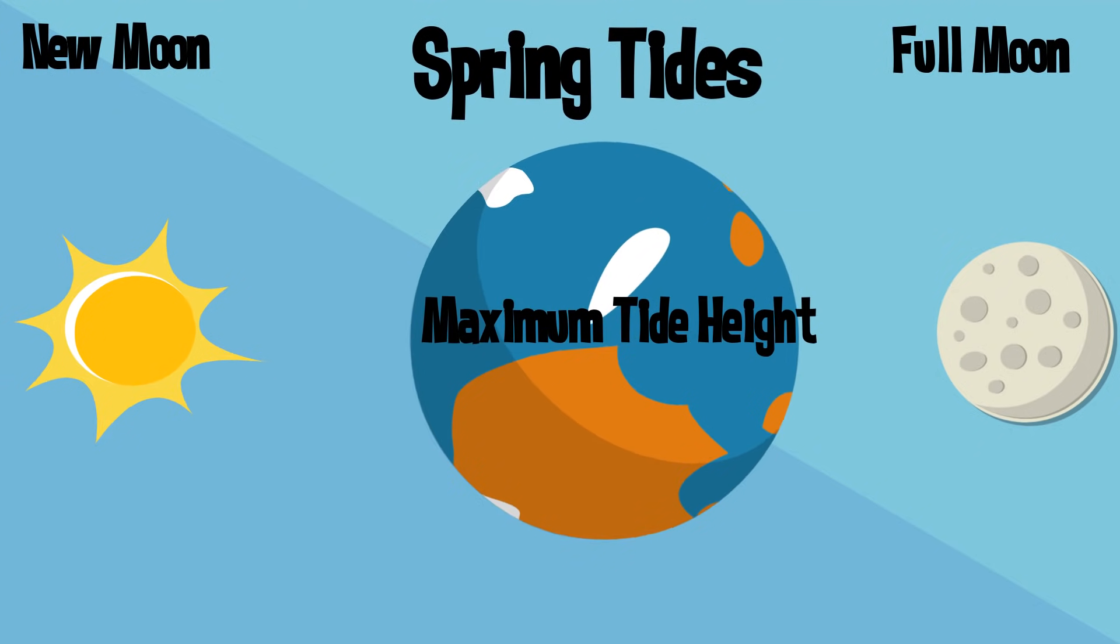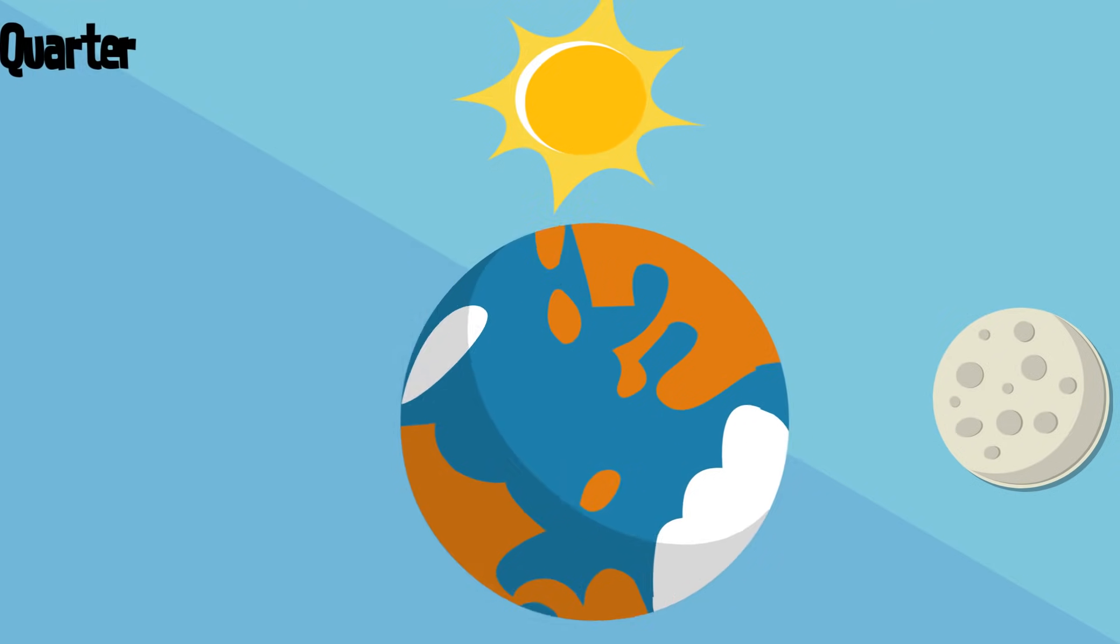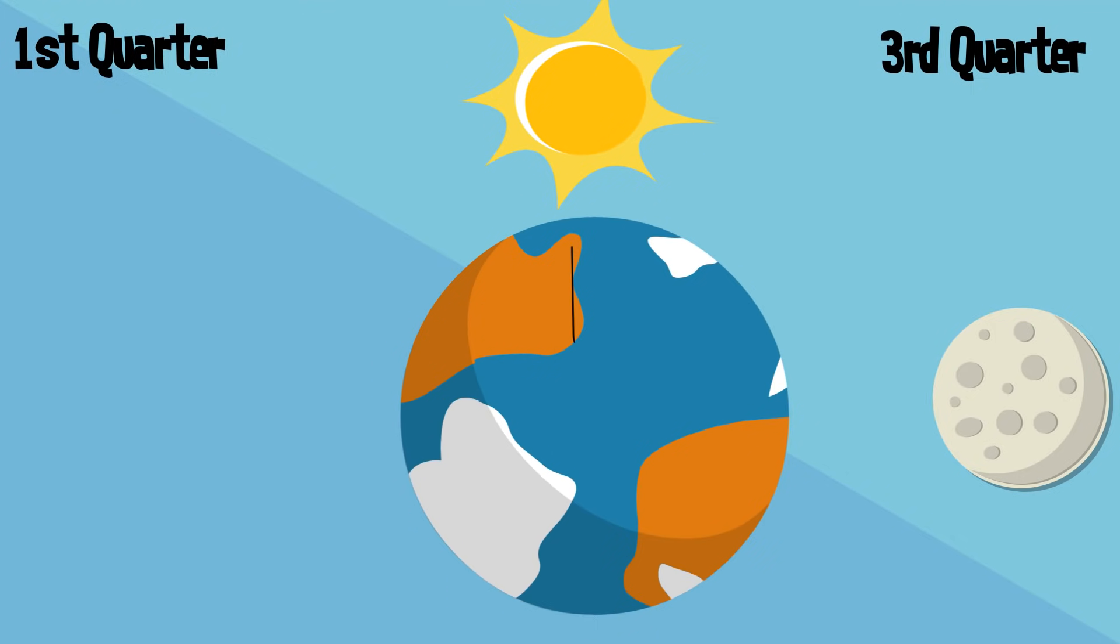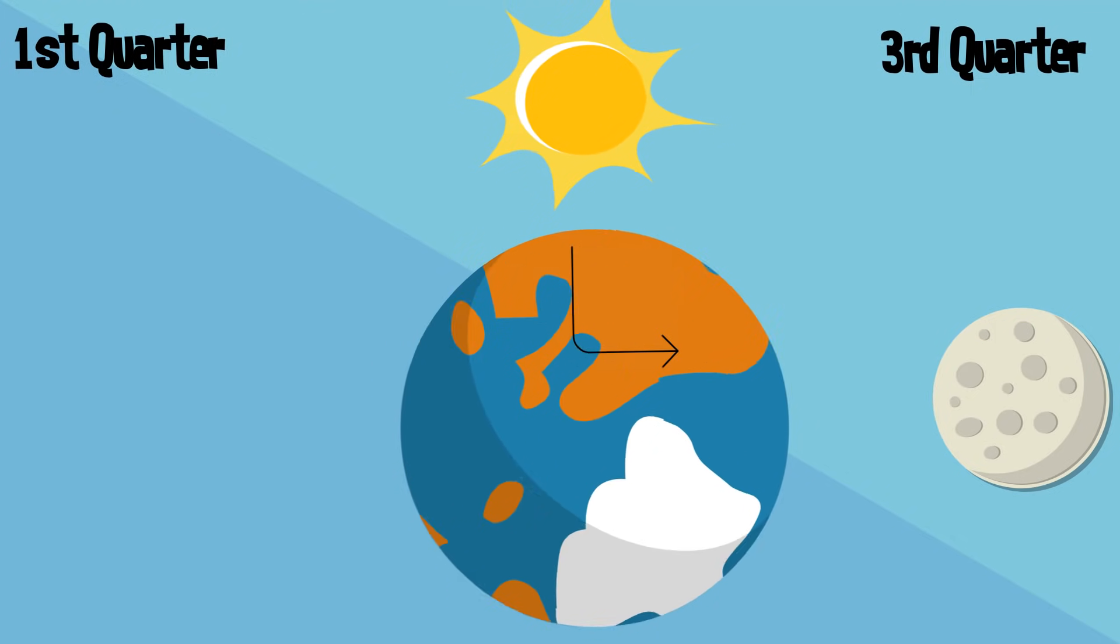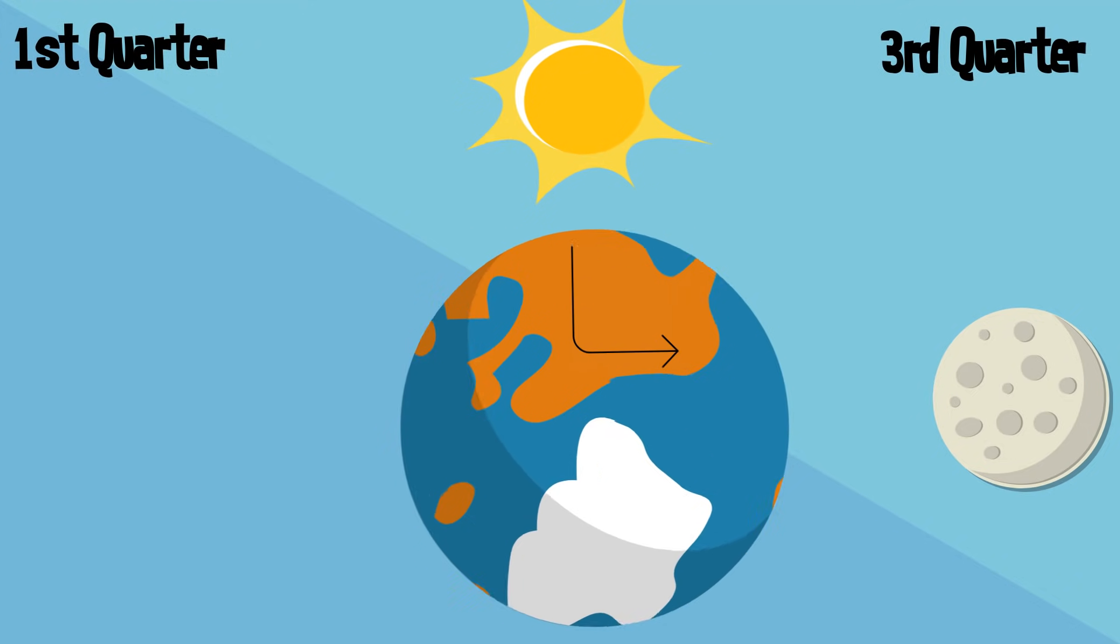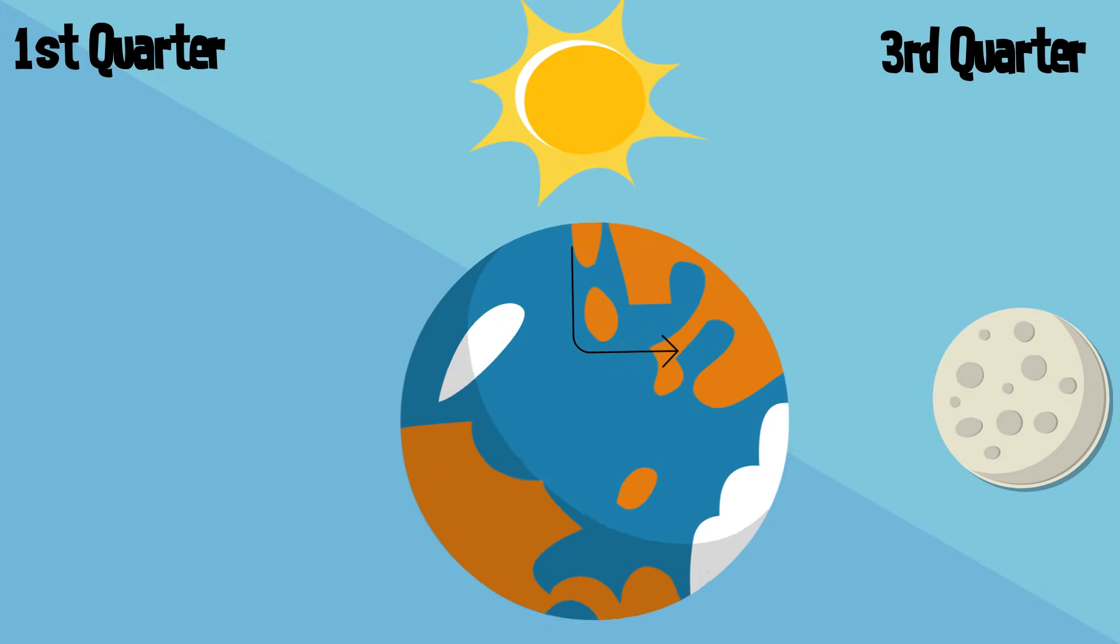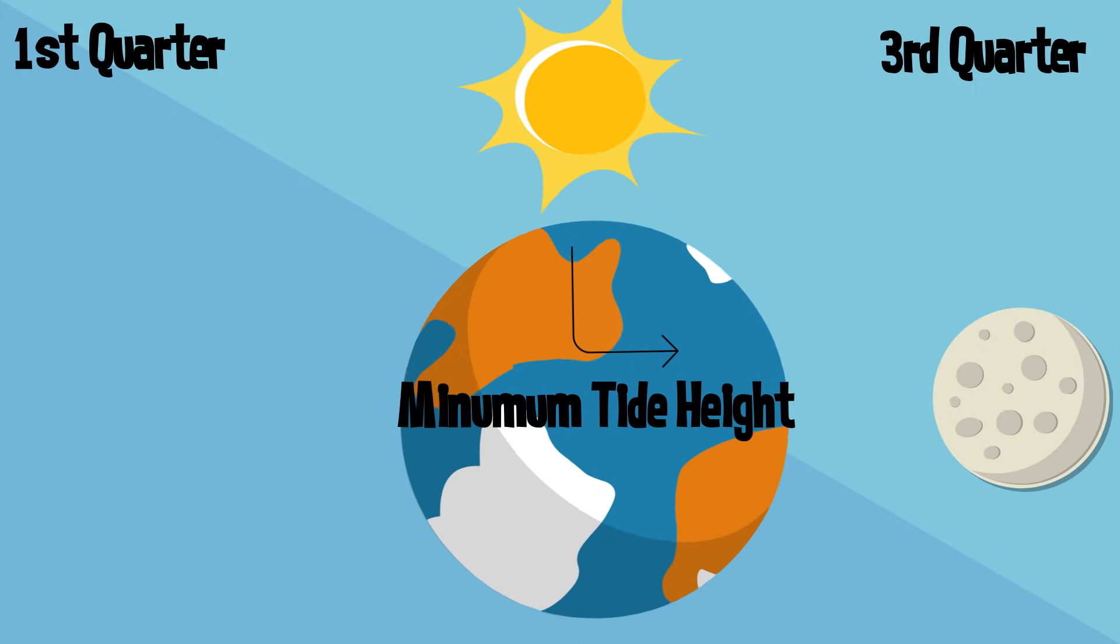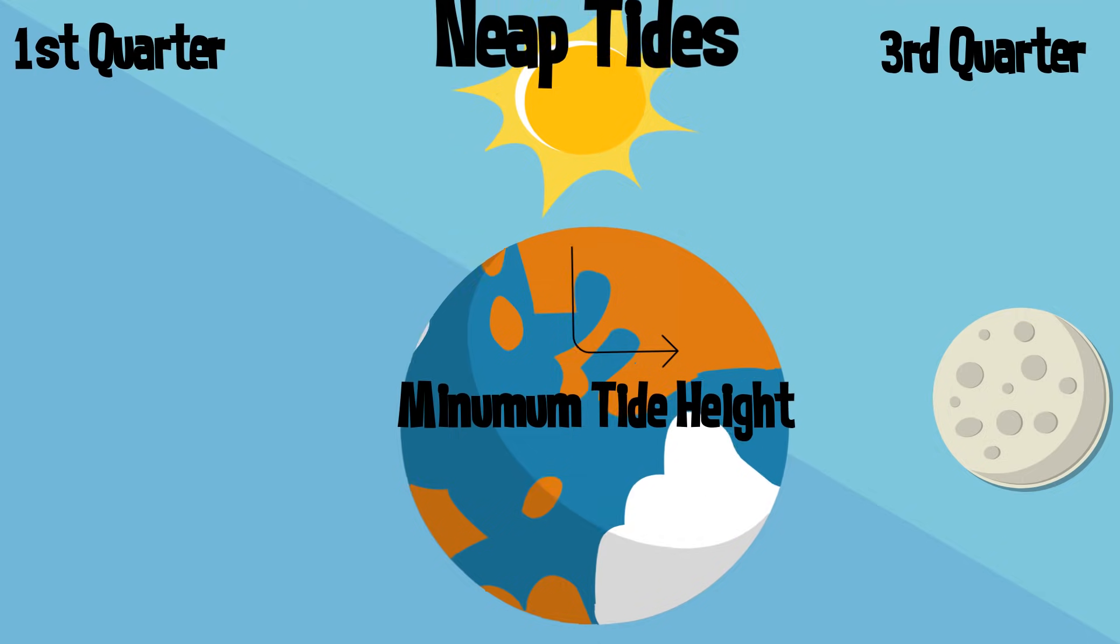When the moon is at first quarter or third quarter, the sun and moon are separated by 90 degrees, and the solar tidal force cancels the moon's tidal force. At these points in the lunar cycle, the tide's range is at its minimum. This is called neap tides.